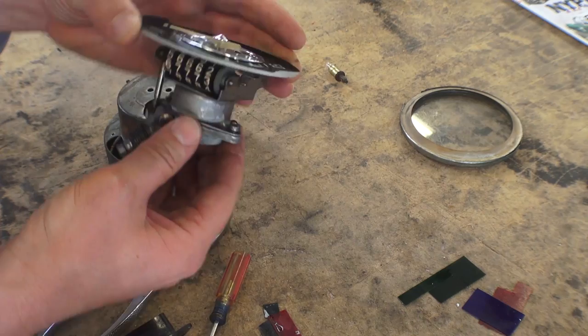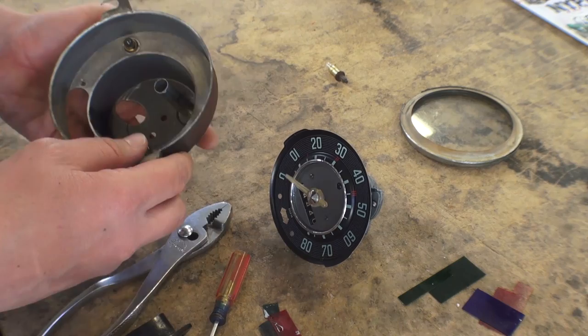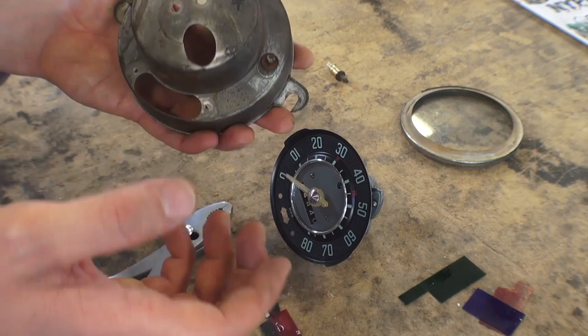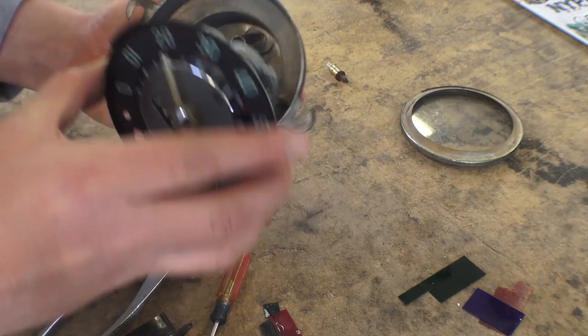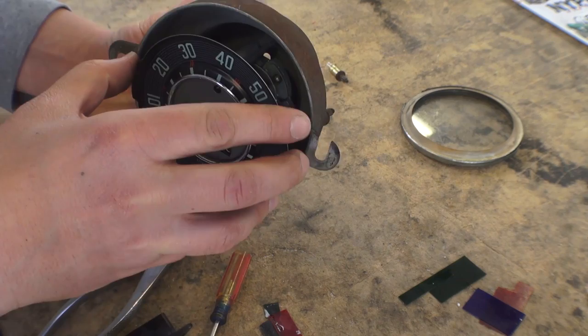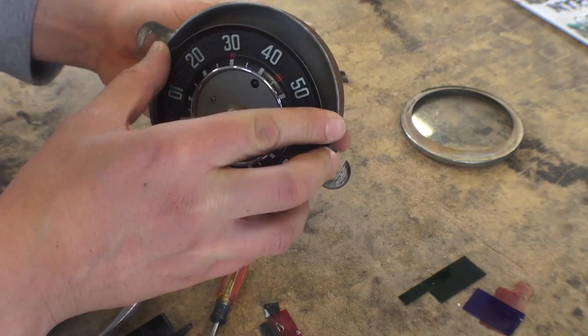We basically covered everything it would take to restore your speedometer. There's really not much else to it. Once you spray up this, let it dry. Sometimes you might need to let it dry overnight, but that Duplicolor stainless steel paint gets dry in a matter of half an hour. Basically then you get your dial and put that back in. Insert it into the hole back here.